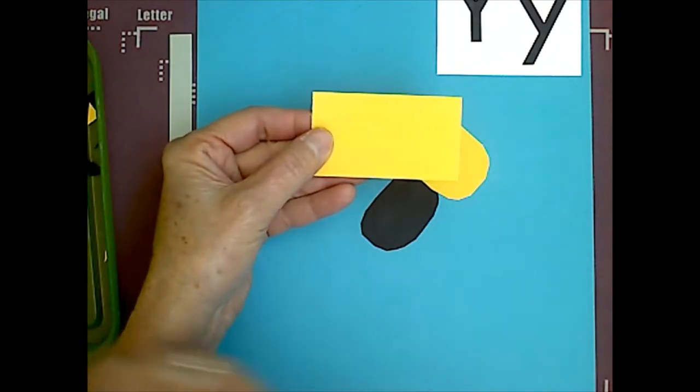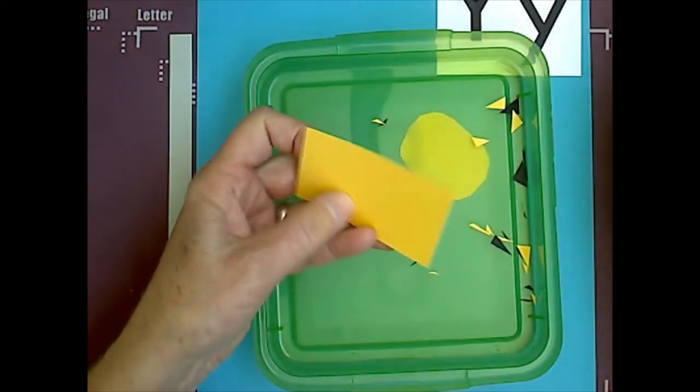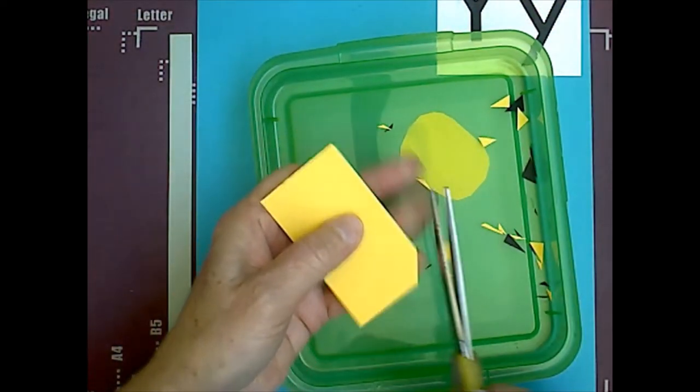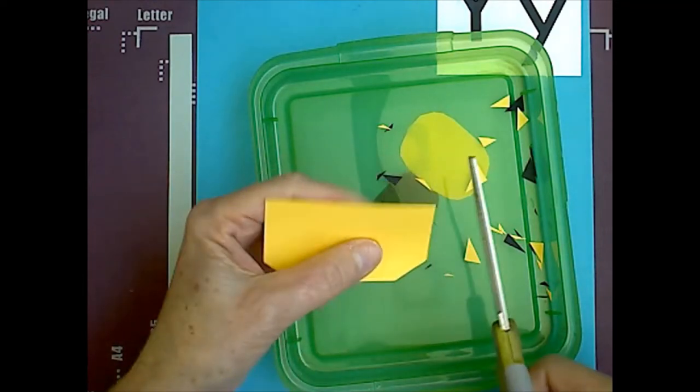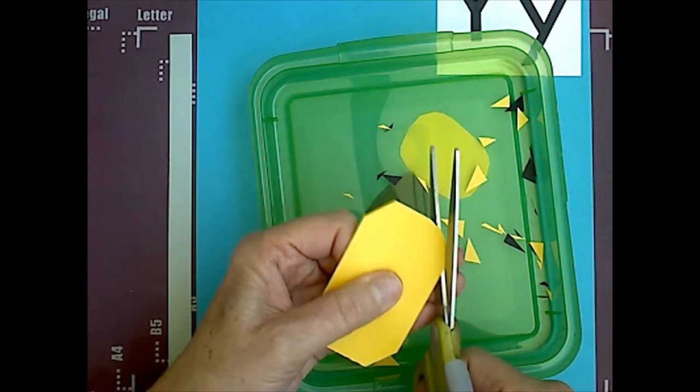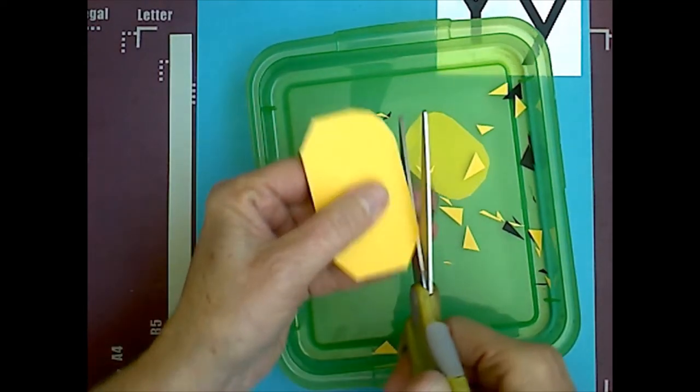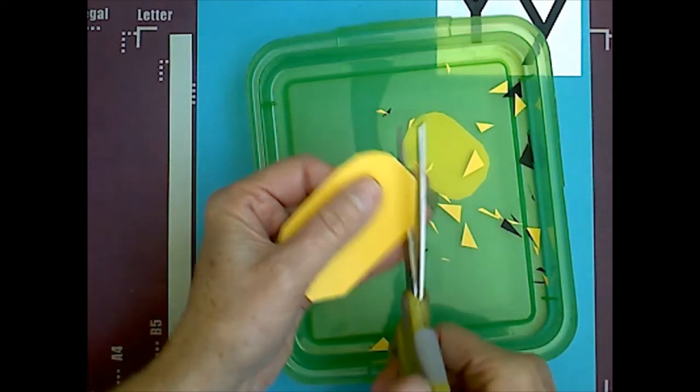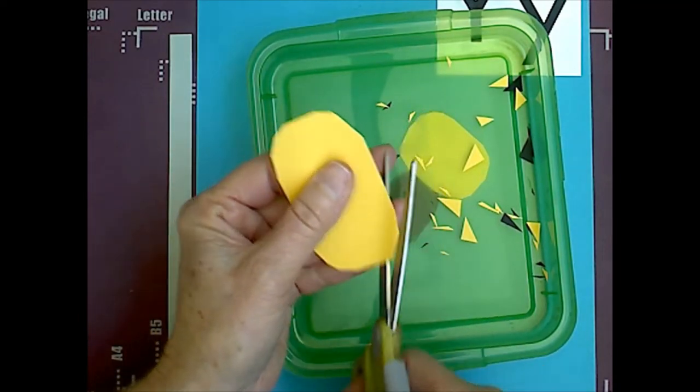And now, we're going to do the last yellow rectangle. This is the abdomen. We're going to cut all four corners, and magic cut each of those. So, it looks somewhat like an oval when we're done.